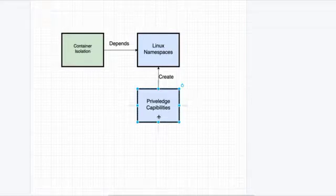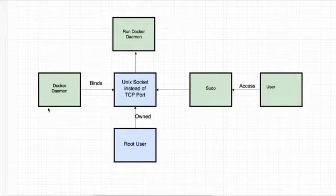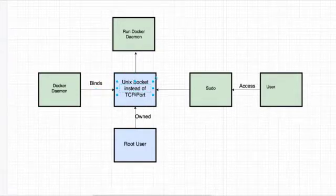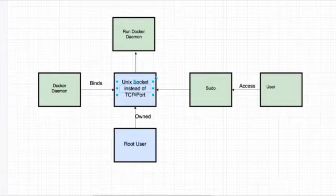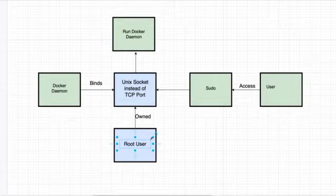Creating Linux namespaces requires the privilege capabilities of the root user. So whenever you install Docker, you will compulsorily have to start the process with the root user, and most containers you will find also run through the root user. The Docker daemon binds to a Unix socket — which we covered in a previous session — and because Docker uses a Unix socket instead of a TCP port, that socket is owned by the root user.